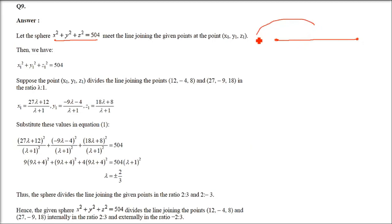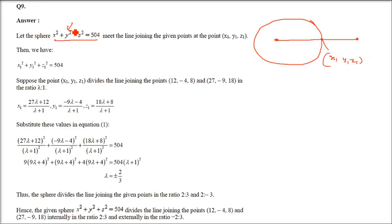Now here is some intersection point. Let us take it as (x1, y1, z1). This point (x1, y1, z1) is going to lie on the sphere also. So just put x1, y1, z1 in the equation of this sphere: x1² + y1² + z1² = 504.